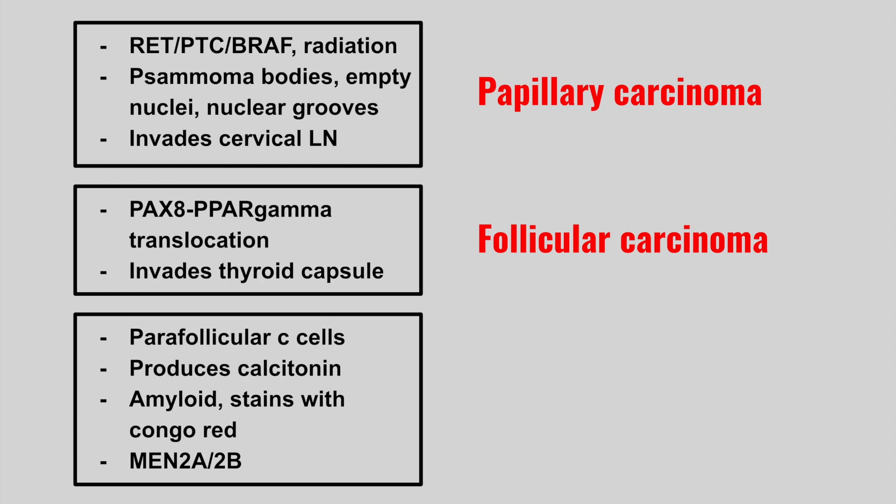The next type of thyroid cancer arises from the parafollicular C cells, produces calcitonin, and we can see amyloid. It stains with Congo red staining, and it's part of the MEN-2A and MEN-2B syndromes. This is medullary carcinoma.